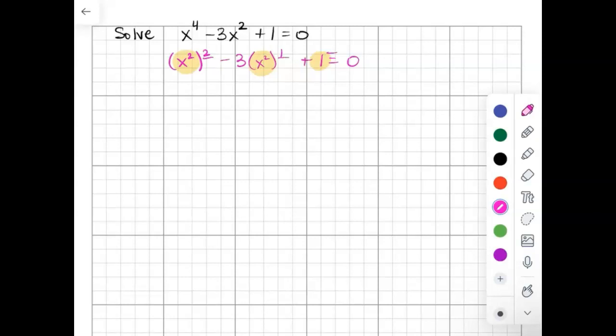However, instead of x equals, my x in this case is x squared. So we're going to say x squared equals the square root of b squared. Nope, already messing that up.